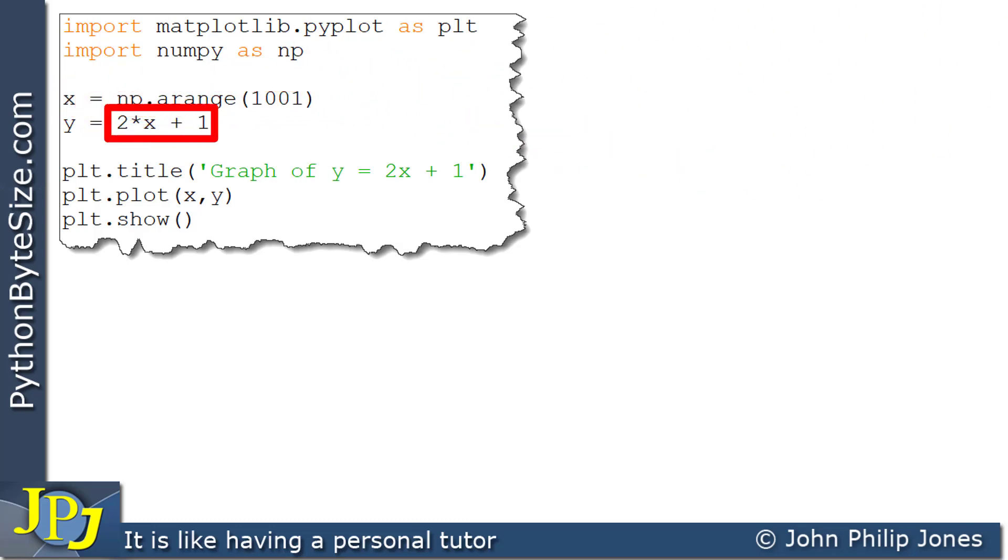And of course, we say that this calculation is broadcast across the entire numpy array x, meaning that each value in x will have a corresponding value of y in the numpy array that's bound to y.